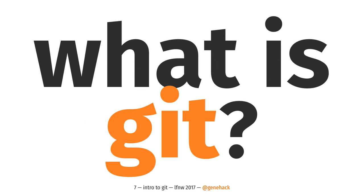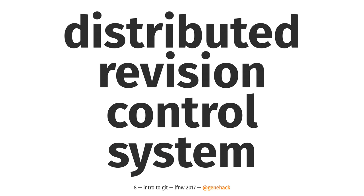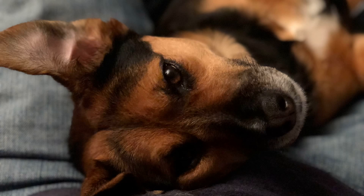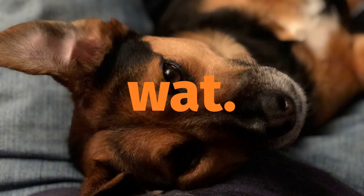So what is Git? If you go out on the internet and try to determine what Git is, you will learn that Git is a distributed revision control system. This definition has the unique combination of being 100% accurate and also being completely useless, unless you already know what these words mean. If you don't already know what it means, you might react a little bit like this — that's my dog looking perplexed.